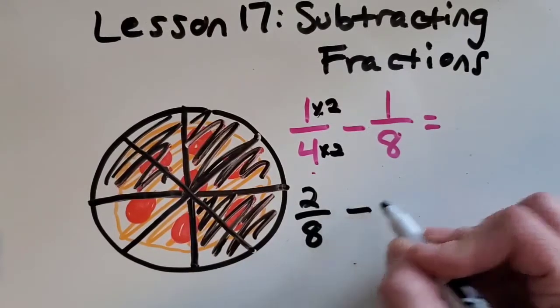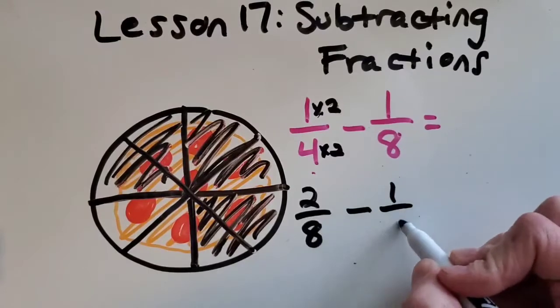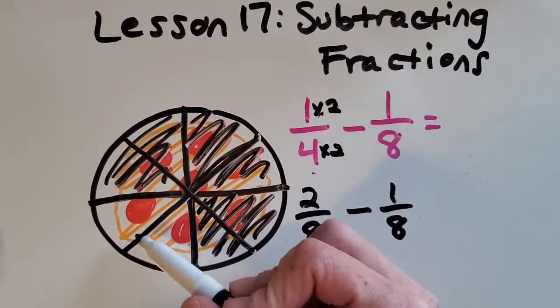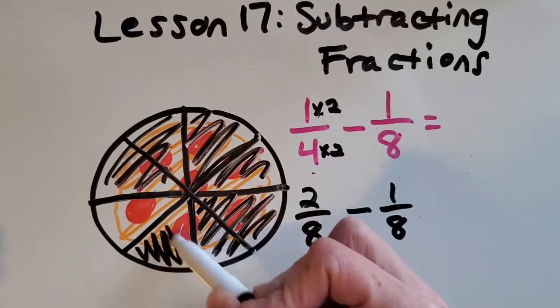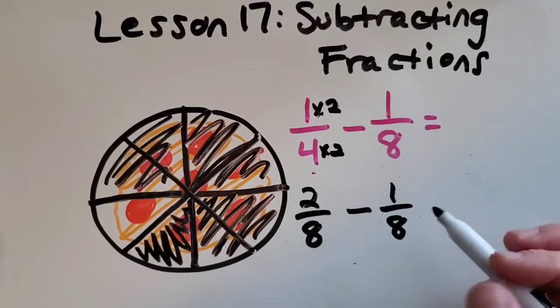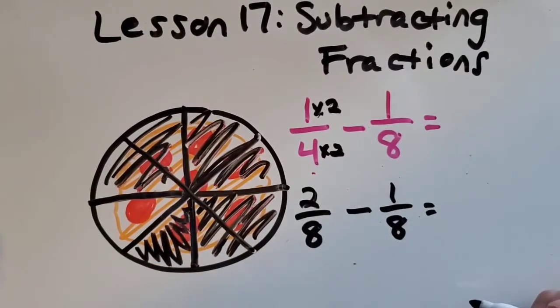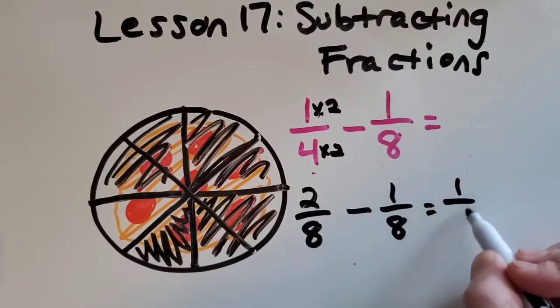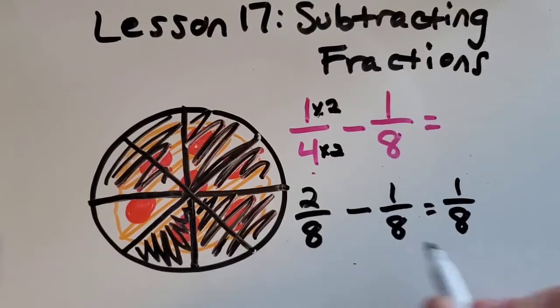So now I can take away 1 eighth and I can do that with my picture too. I could shade in 1 slice and see how much I have left. What do you guys think? All right good I've got just 1 eighth left, just one slice left. 2 minus 1 is 1. Keep the denominator the same. Awesome.